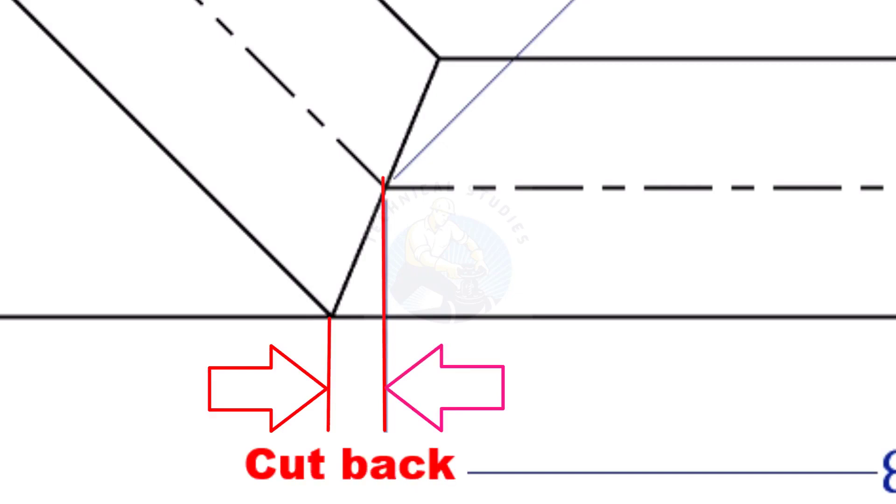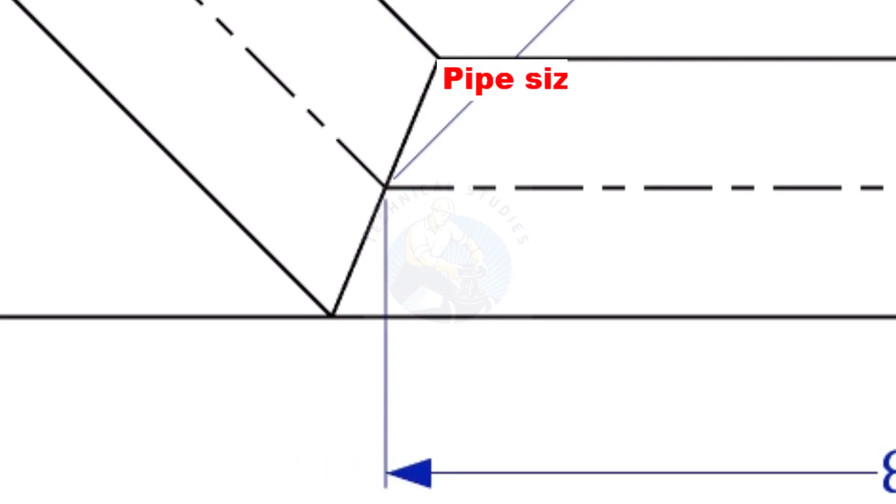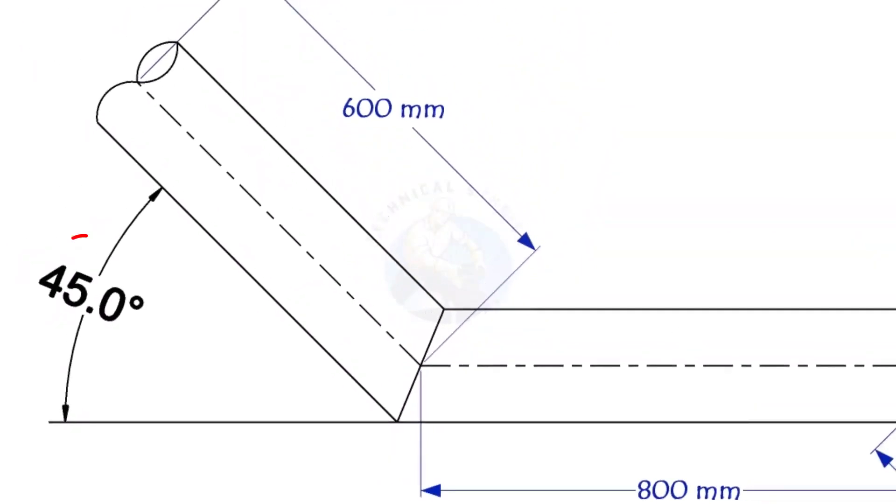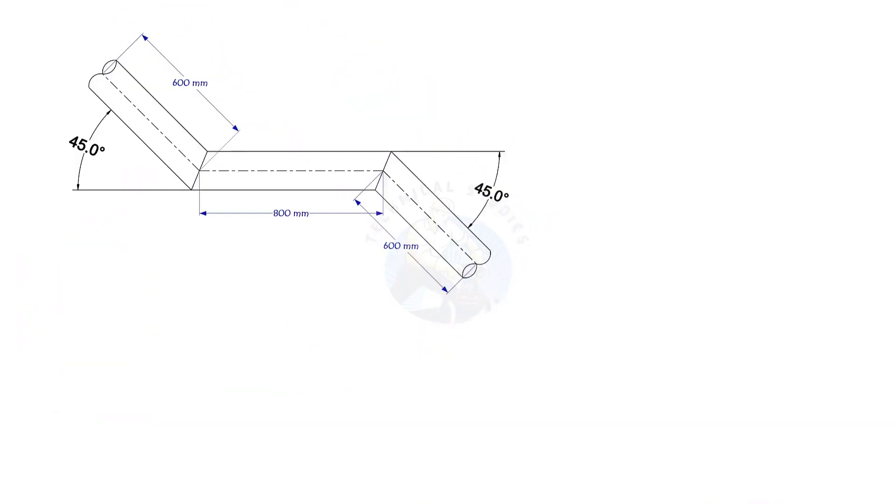To mark a miter cut, we need to know the cutback of the miter. In this offset, the nominal diameter of the pipe is 6 inch. The angle of the miter is 45 degrees. This method is suitable for cutback of any degree. The outside diameter of a 6 inch pipe is 168.3 millimeters.